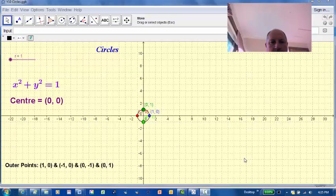This video will look at the graphs of circles. For year 10, we are keeping the circles pretty simple. The equation of a circle is written as x squared plus y squared equals a number. The basic case is when we make x squared plus y squared equal 1.